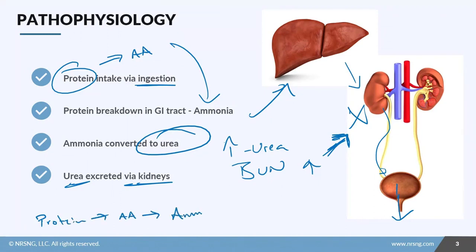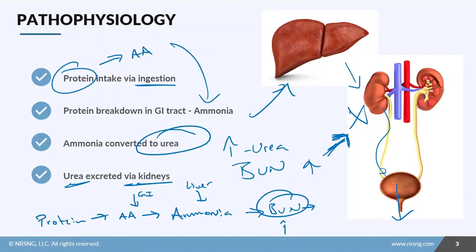To recap the pathway: protein is converted into amino acids, then into ammonia — this happens in the GI tract. Then that ammonia is converted into urea in the liver, and excreted through the kidneys out of the body. So if this BUN value goes up, we need to look at the kidneys as the primary problem.